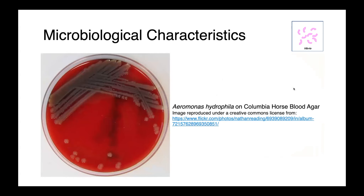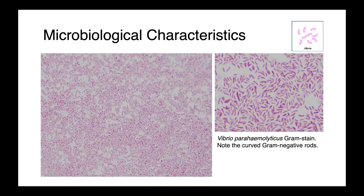Here we have Aeromonas hydrophila growing on Columbia horse blood agar. Our typical blood agar has sheep's blood cells, but this particular plate contains horse blood, although Aeromonas hydrophila will also grow on sheep's blood. Here you can see a gram stain of a pure culture of Vibrio parahaemolyticus. Particularly on the right, you can appreciate that many of these cells have a slightly curved or comma-shaped morphology — a really characteristic morphological finding for this genus.